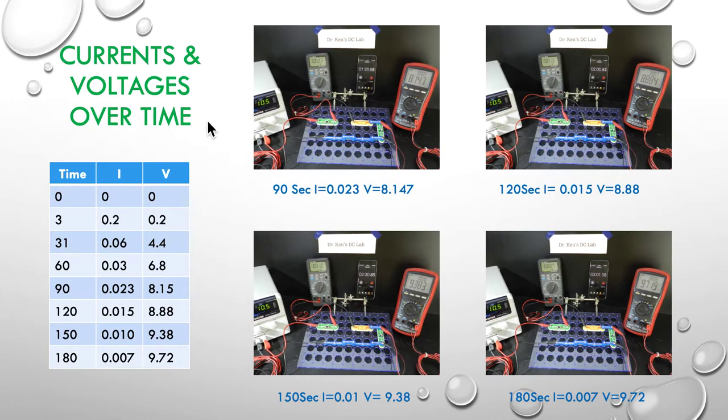Our next picture is a continuation of the process. So now we're at one minute, 30 seconds or one and a half minutes, which is 90 seconds. We're down to 0.023 and 8.147 volts.